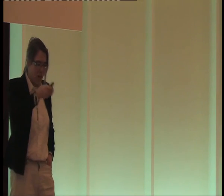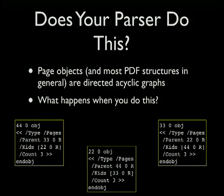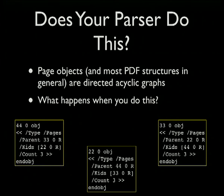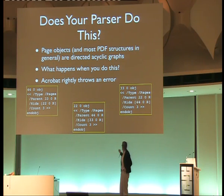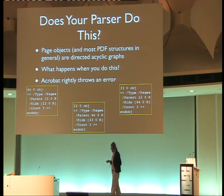The spec very explicitly says that the page tree is a directed acyclic graph, although it doesn't say what happens if there is a cycle in it. When I read that, I was curious how many PDF parsers would go into an infinite loop if you fed them objects like this — where each object is every other one's parent or child. Acrobat will throw an error when it encounters this, but I haven't tested other PDF parsers to see if any of them go into an infinite loop.